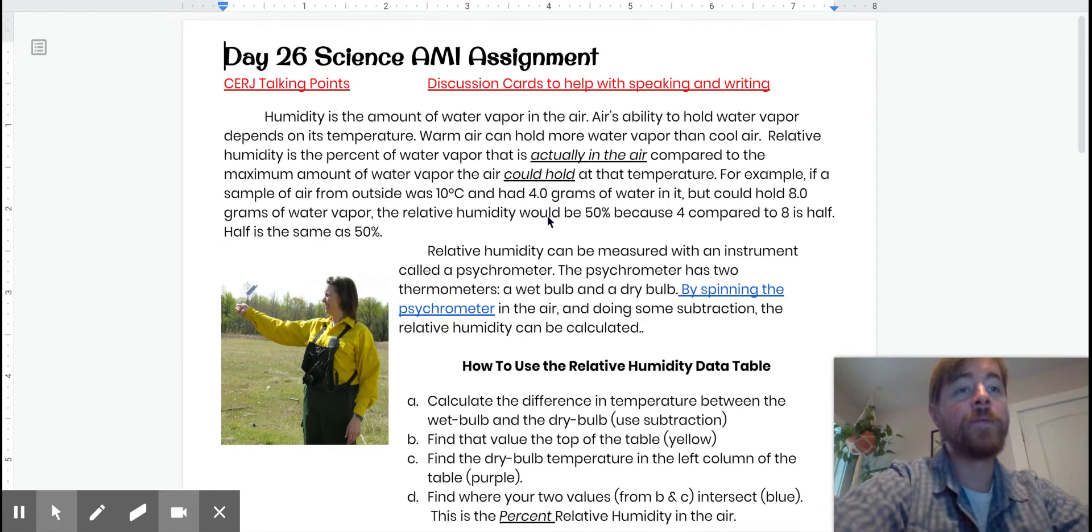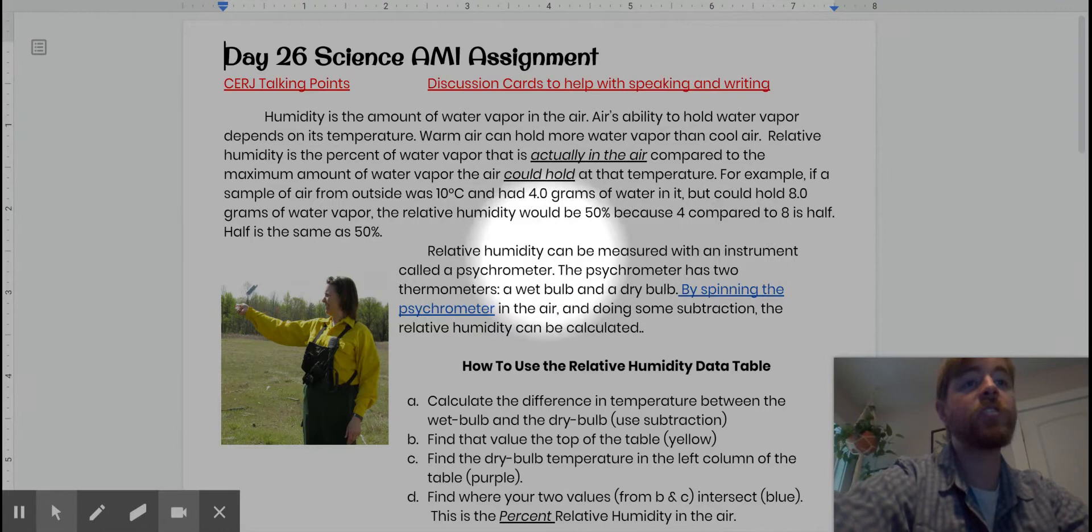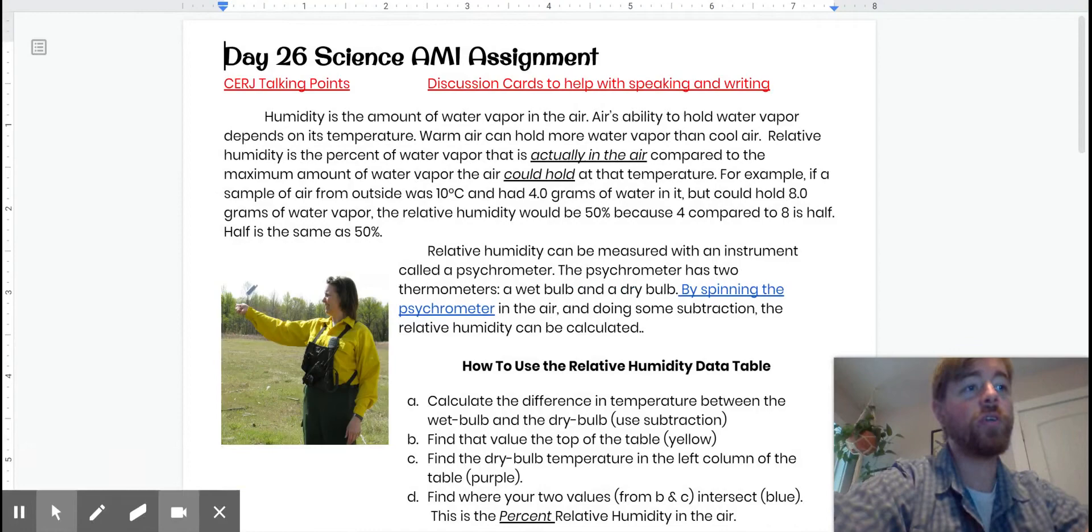The warmer the air, the more water it can hold, which is why we don't get much out of our sweat in the summertime. Relative humidity can be measured with an instrument called a psychrometer, also called the sling psychrometer because you get to sling it. The psychrometer has two thermometers, a wet bulb and a dry bulb. By spinning the psychrometer in the air and doing some subtraction, the relative humidity can be calculated.